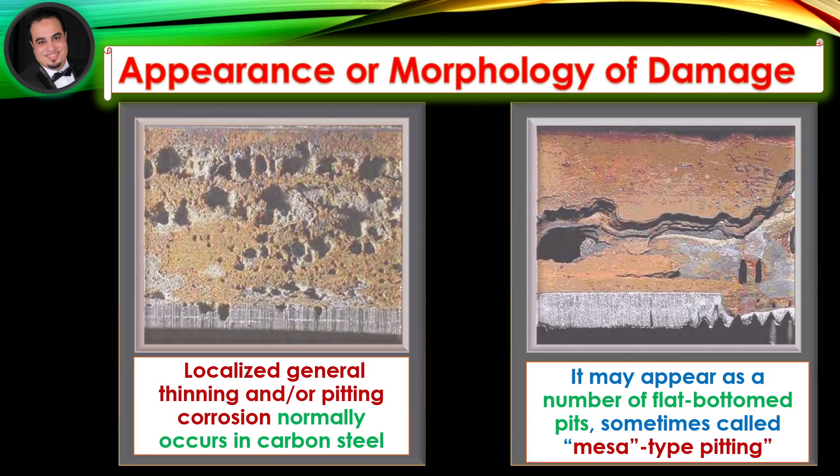Appearance or morphology of damage: Localized general thinning and/or pitting corrosion normally occurs in carbon steel. It may appear as a number of flat-bottomed pits, sometimes called Mesa-type pitting.